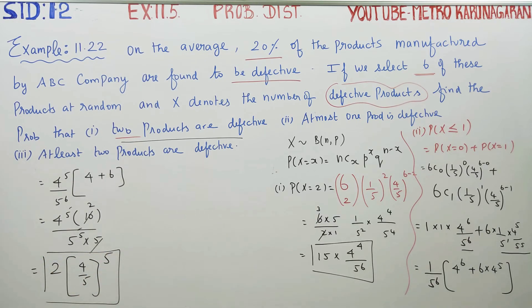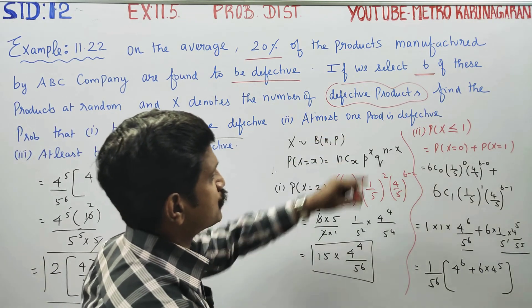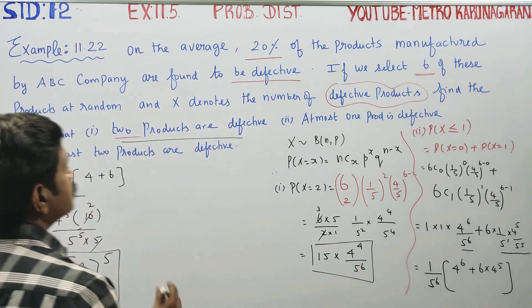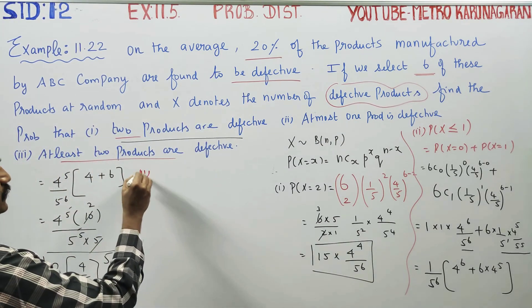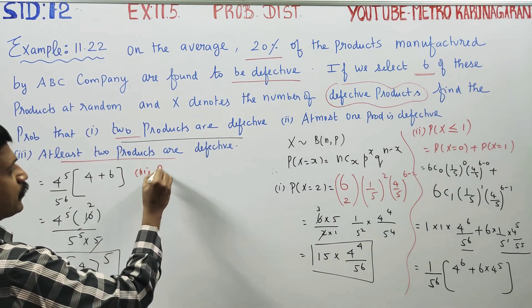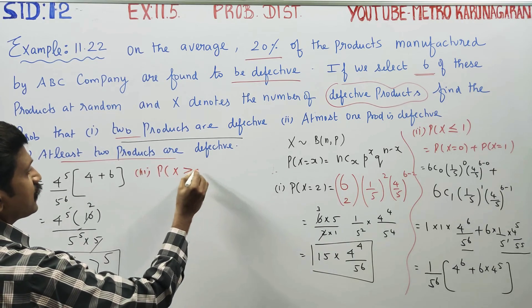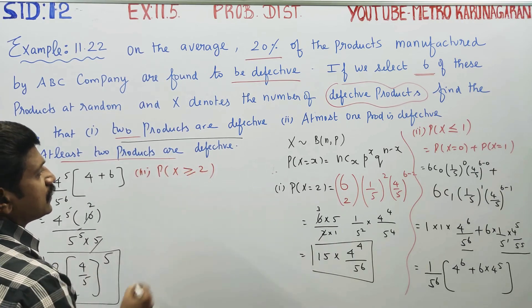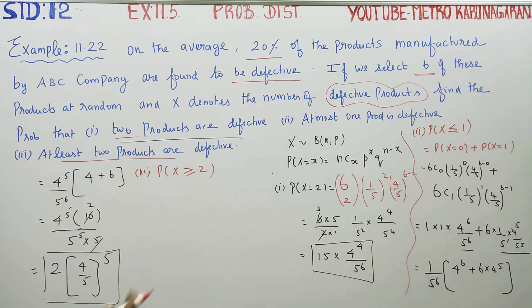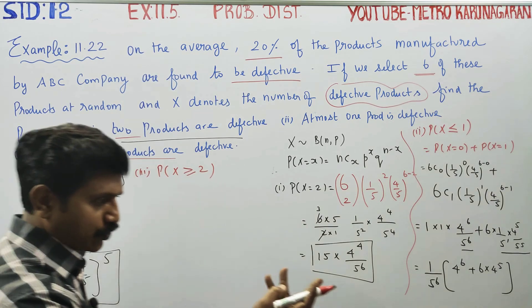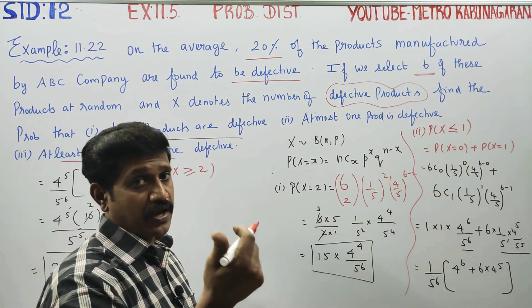Third question: at least two products. Probability of X greater than or equal to 2. X can take values 2, 3, 4, 5, 6.